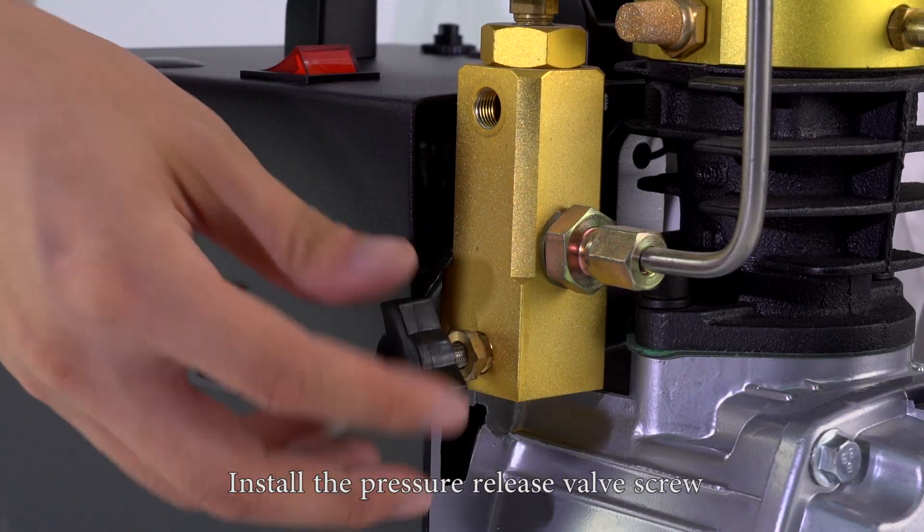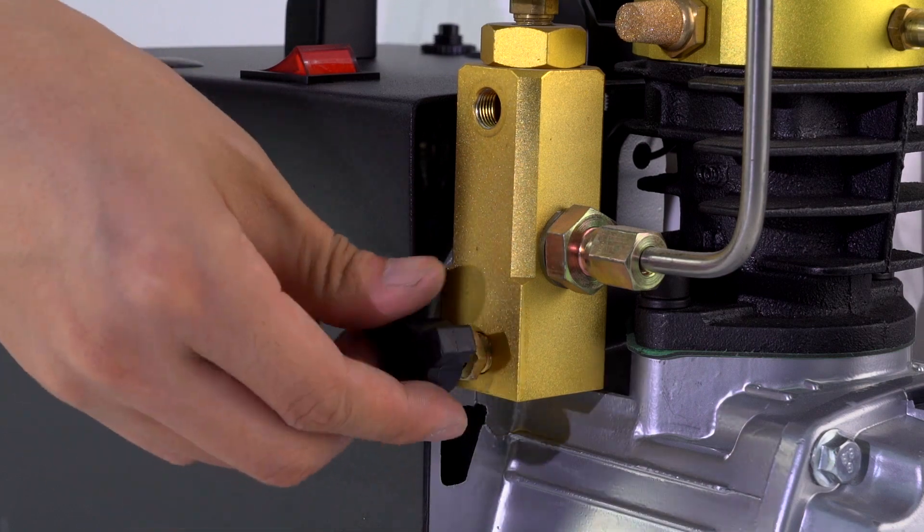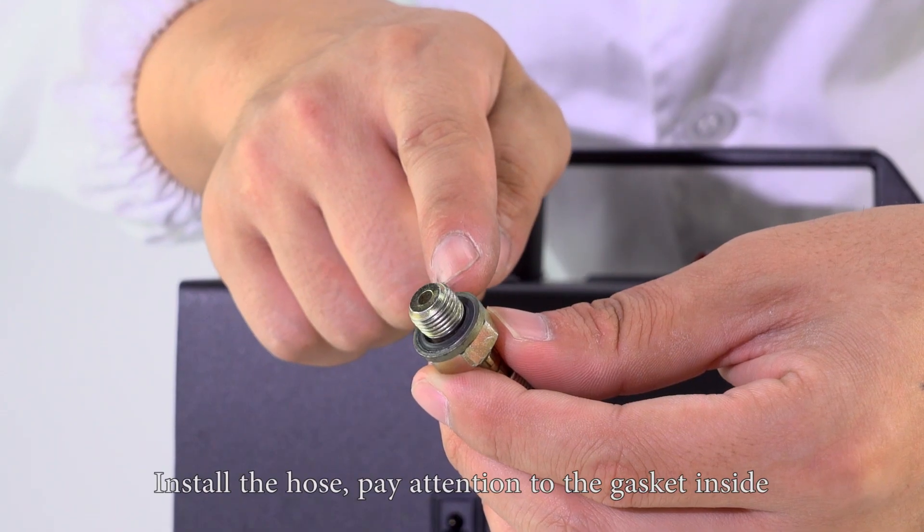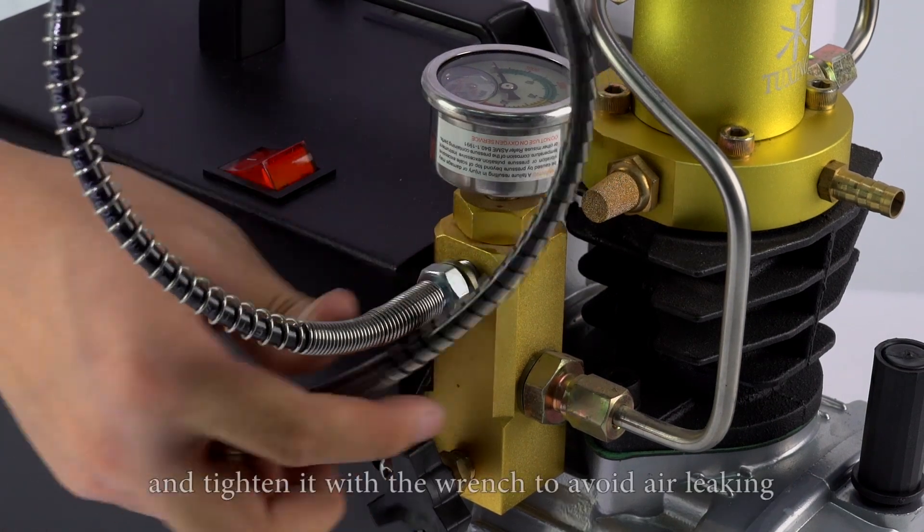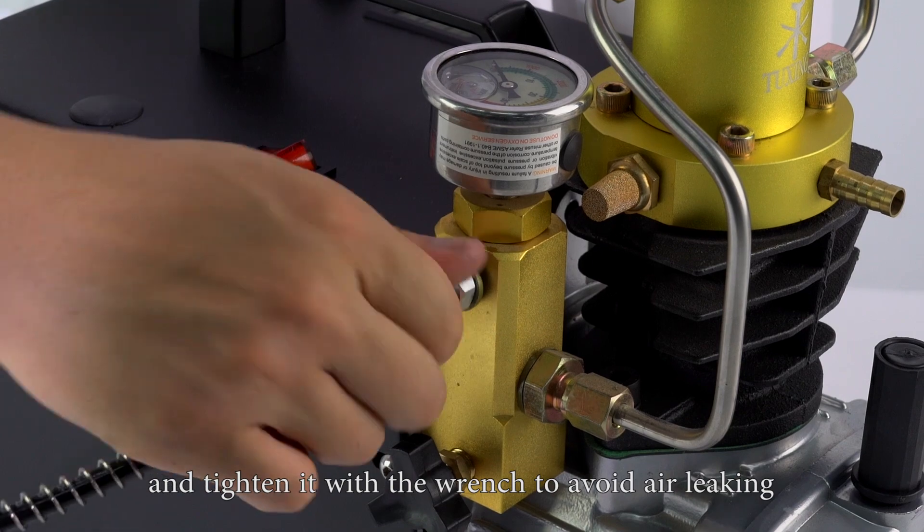Install the pressure release valve screw. Install the hose. Pay attention to the gasket inside and tighten it with the wrench to avoid air leaking.